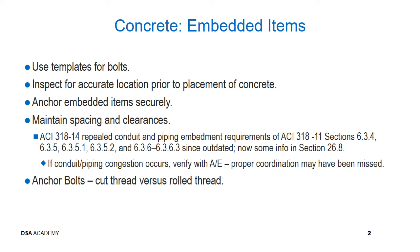Anchor bolts: cut thread versus roll thread. These are two different thread-making processes for bolts and rods. For cutting, since the material is being removed from the solid rod, the rod diameter is equal to the nominal diameter of the rod. For rolling, when material is squeezed to form the threads, the rod diameter is smaller than the nominal diameter of the rod.